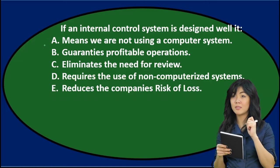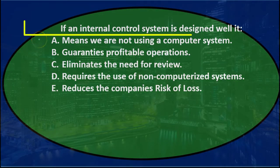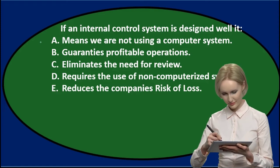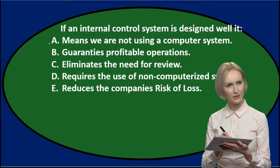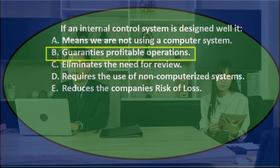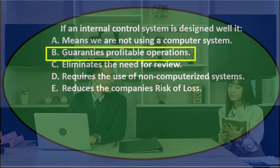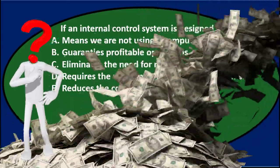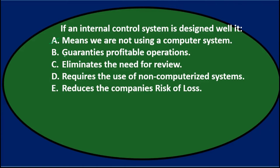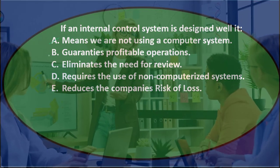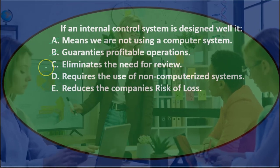We're going to read through this one more time and see if we can eliminate some options. If an internal control system is designed well — A. Means we are not using a computerized system. An internal control system may or may not use a computerized system; computers could be used and could benefit greatly. So it's not A. B. Guarantees profitable operations — the word 'guaranteeing' profits is really definitive; guaranteeing profits is not the objective of internal control. The real objective is to safeguard assets and protect against losses. It's probably helpful for long-term profits, but there's no guarantee.